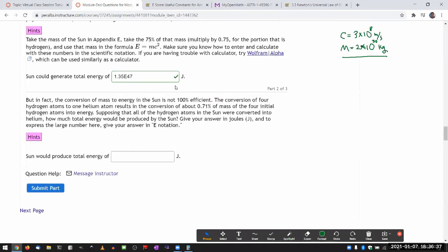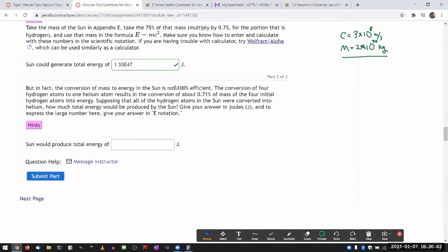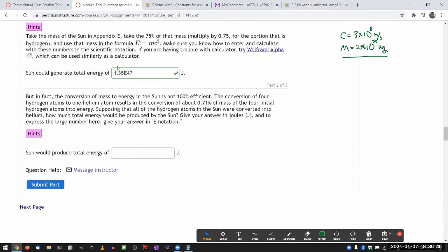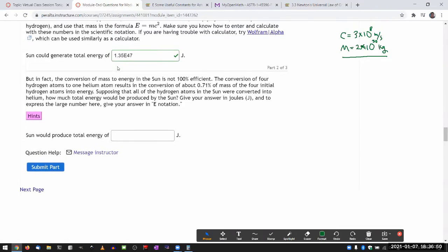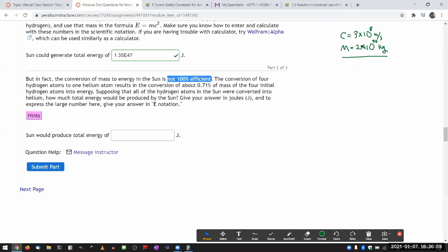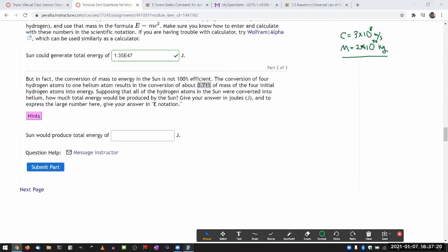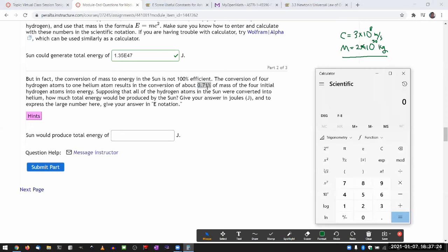Okay, so for the next level refinement to this estimate, so this is a gross overestimate of what the end result is. So this part is having you correct it by noting that it is not 100% efficient, not all of the hydrogen mass goes into energy. So the conversion of four hydrogen atoms to one helium atom, helium four, two protons, two neutrons results in a conversion of about 0.71% of mass into energy. So supposing that all of the hydrogen atoms were converted into helium. Okay, so I guess I can use the result here and just take the 0.71% of that, that'll be enough.